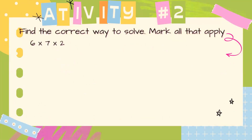Now let's do Activity number 2. Activity number 2 says: find the correct way to solve — mark all that apply. The multiplication equation we have is 6 times 7 times 2. Since it says mark all that apply, we have to make sure we find all the possible answers corresponding to this multiplication equation.